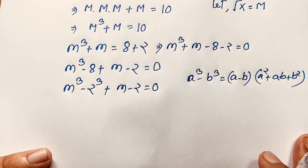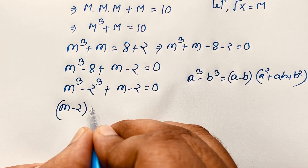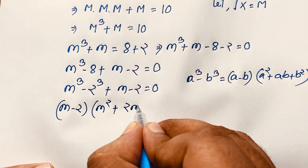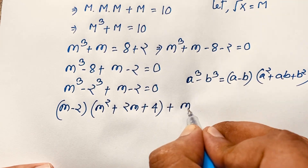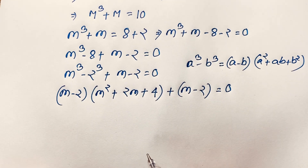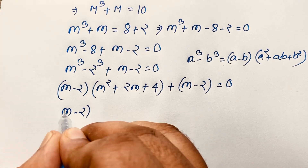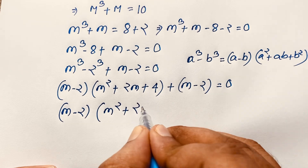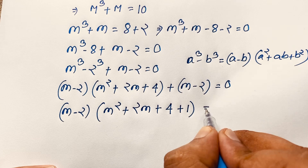Applying this formula here, m³ minus 8 becomes (m minus 2)(m² plus 2m plus 4). Then I also have (m minus 2) as a common factor from the remaining terms, so dividing gives m² plus 2m plus 4 plus 1, which is equal to 0.